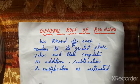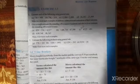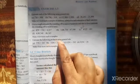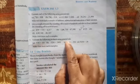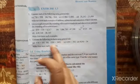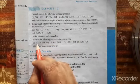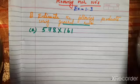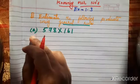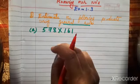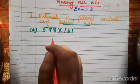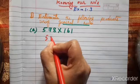Take a screenshot of this and try. Now Exercise 1.3, third question: estimate the following product using the general rule. Since no specific place is mentioned, we use the general rule — round to the greatest place value. Question (a): 578 into 161. We need to find the estimated product.